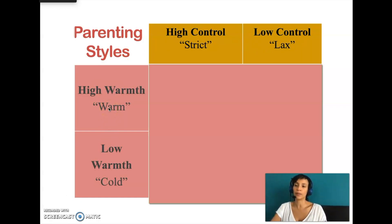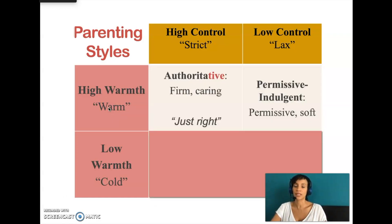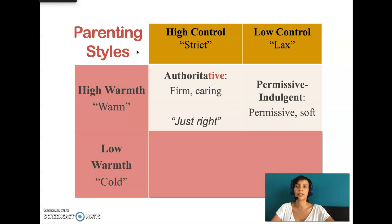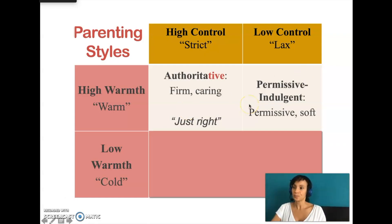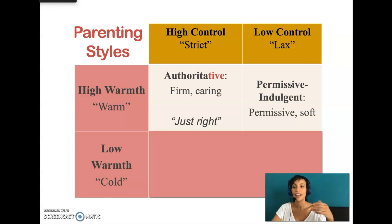The authoritative parenting style — pay attention to the suffix 'authoritative' — combines a moderate to high degree of control with a high level of warmth and responsiveness. These are parents who are firm but caring; they explain rules and encourage discussion. They're considered to be just right, at least for Western standards. On the other hand, permissive indulgent parenting provides high warmth but with little control. Indulgent parents use little punishment and usually simply accept their child's behavior — they're more of a friend rather than a parent.